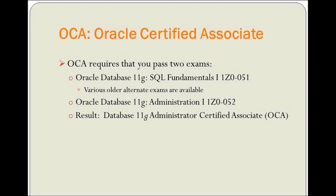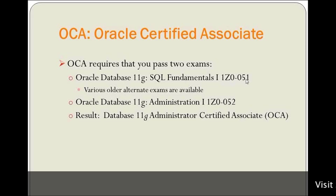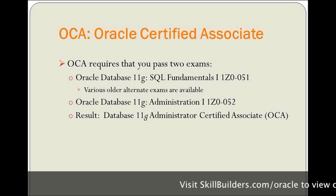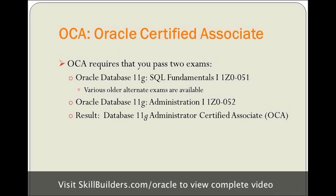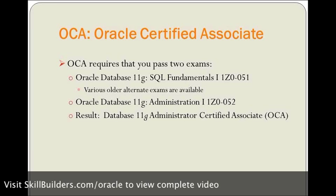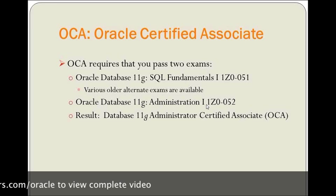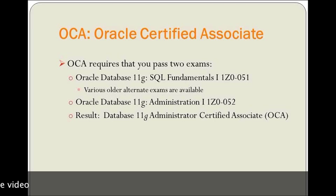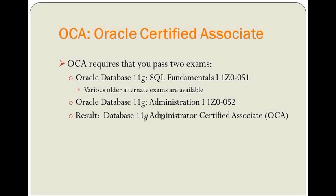For the OCA - Oracle Certified Associate - it requires you to pass two exams. The first one is the Oracle Database 11G SQL Fundamentals 1, exam number 1Z0-051. You don't necessarily have to take this particular exam if you've already passed one of the older equivalent exams that tests your SQL capability. What you must take is the Oracle Database 11G Administration 1, which is 1Z0-052. There are no alternate exams for that one. Once you pass both, you get your OCA.